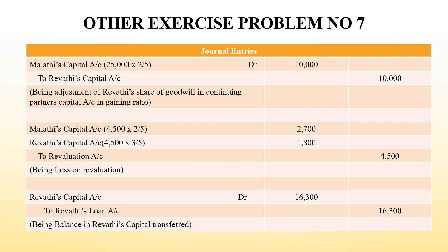So for Revathi, this 10,000 has to go, which comes from Malathi's capital. The amount is 10,000, calculated from the capital account. And next, Malathi's capital account and Revathi's capital account are debited to the revaluation account. This is the revaluation loss, shared between the partners in their profit sharing ratio. The total loss is 4,500 rupees - Malathi takes 2,700 and Revathi takes 1,800. So their respective capital values will be reduced by those amounts.